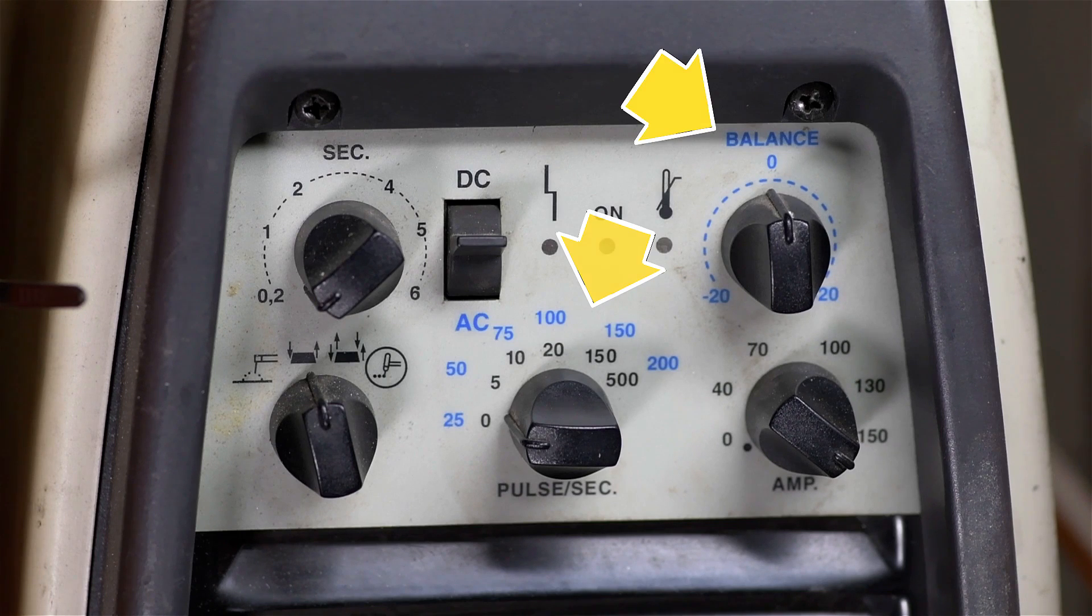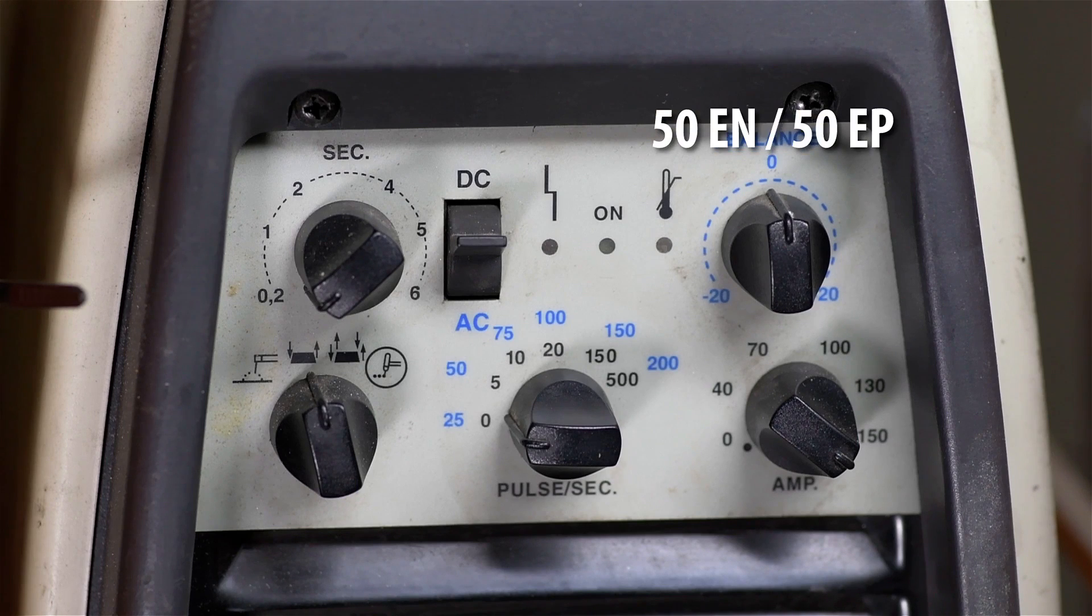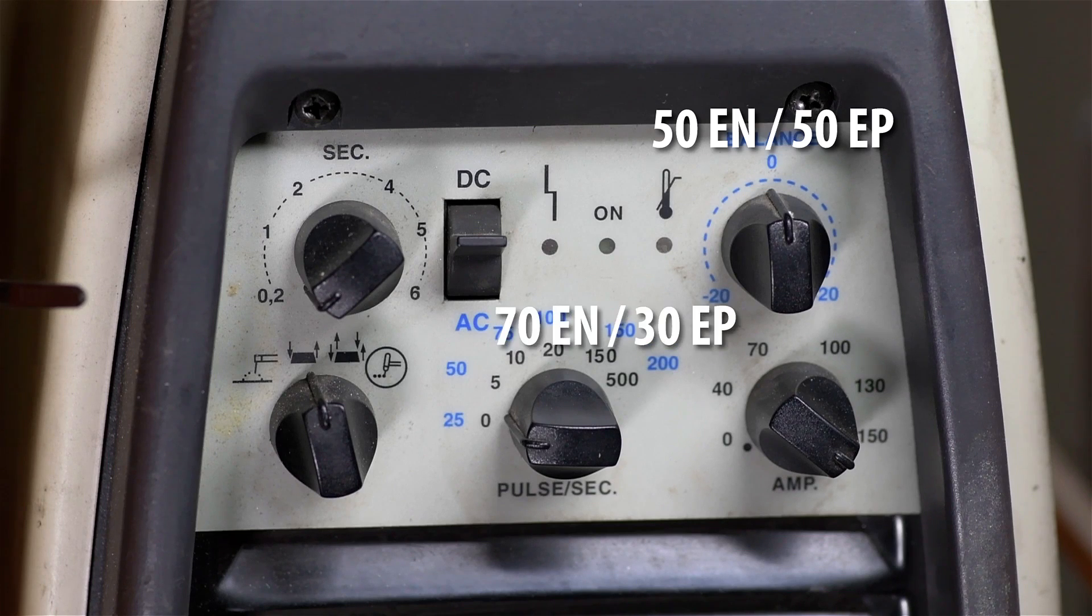Then there's the AC balance control. This goes from negative 20 to positive 20, meaning at the center, or 0, it's a 50-50 balance. You're getting as much electrode positive as you are electrode negative. And a negative 20, for example, would shift that to 70-30. So you get 20 more negative than you have positive.